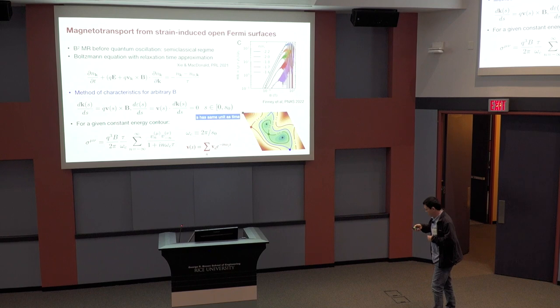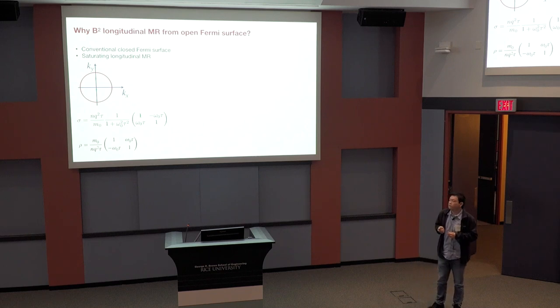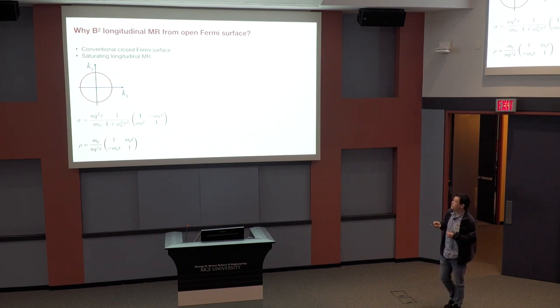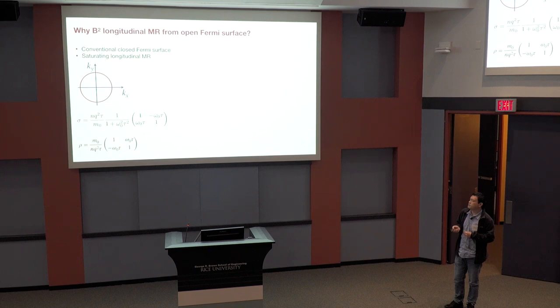So let's go to the physics. So the simplest scenario we have for canonical parabolic dispersion is saturating magnetoresistance. And that can be seen easily by applying that expression, and then we find the textbook conductivity tensor. And inverting that we get a saturating magnetoresistance along the diagonal part, and also a Hall resistance which is linear in B field.